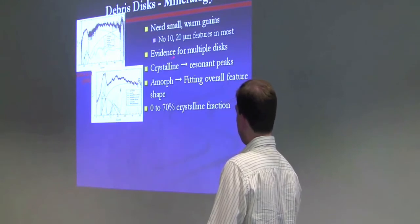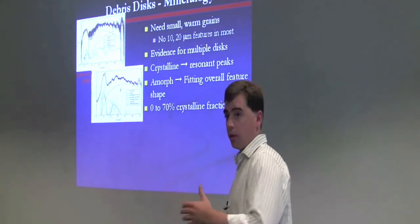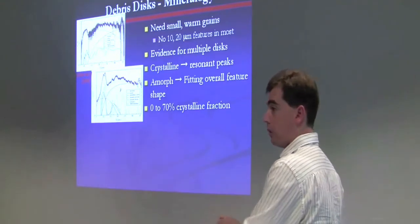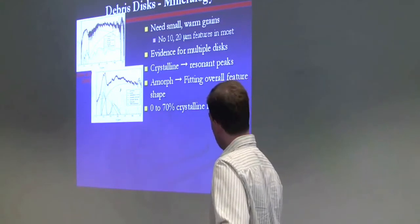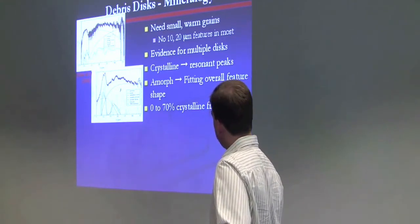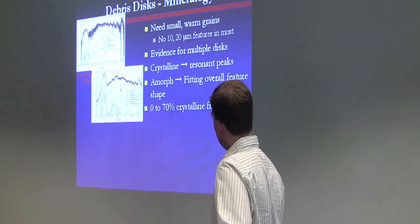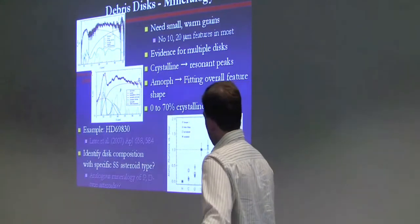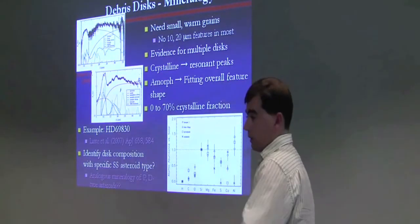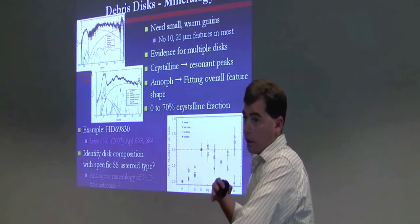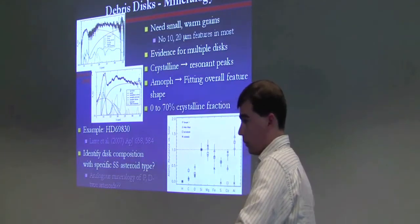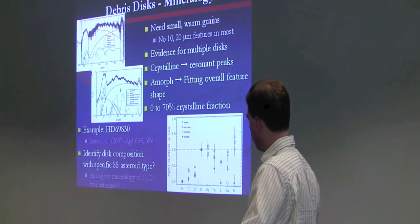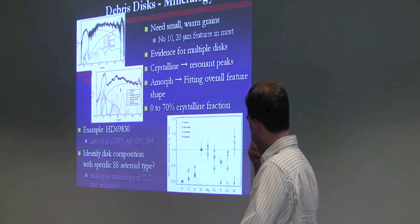We do see evidence for multiple disks around some stars. Some of the thermal excesses are best fit with multiple disks with multiple temperatures. Crystalline fractions range from zero to 70%. What I think would be interesting would be to compare some of the mineralogy that we get from debris disks around other stars to what we know about the debris disks in our own solar system, the asteroid belt, and eventually the Kuiper belt.